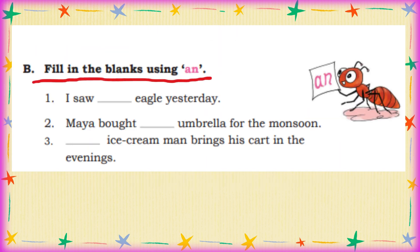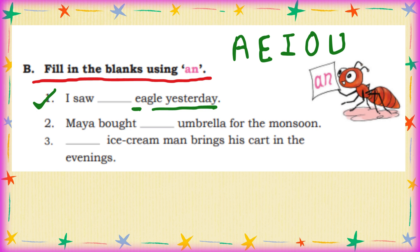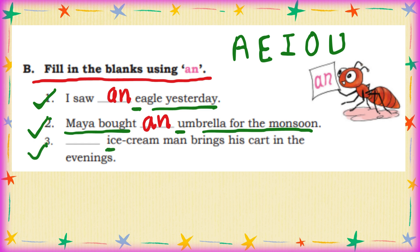Fill in the blanks using AN. If the word starts with A, E, I, O, or U, we use AN. 'Eagle' starts with E — AN eagle. I saw AN eagle yesterday. 'Umbrella' starts with U — AN umbrella. Maya bought AN umbrella for the monsoon. 'Ice cream' starts with I — AN ice cream man brings his cart in the evening.